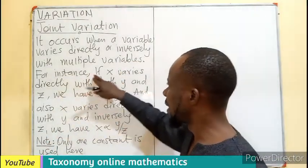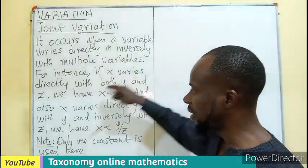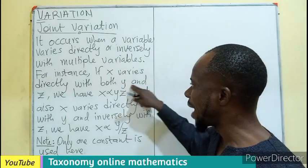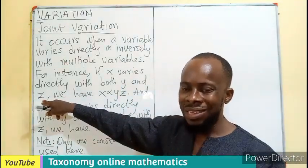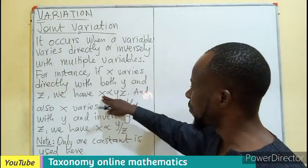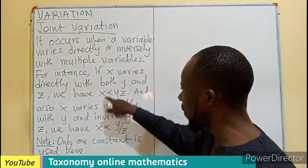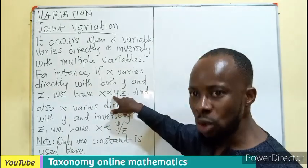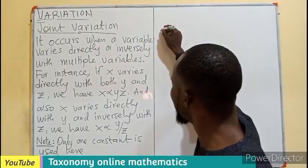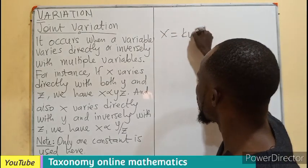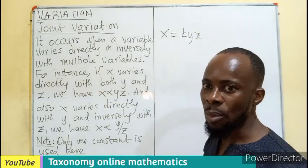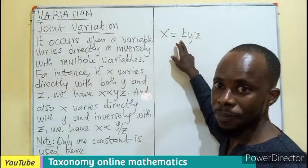For instance, if X varies directly with both Y and Z, meaning as the product of Y and Z, then we have X varying directly as the product of Y and Z. In this case, X will be equal to K times Y times Z if we change the constant of proportionality to become K.